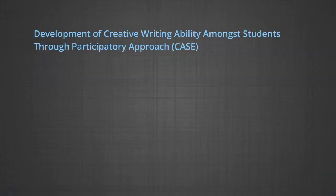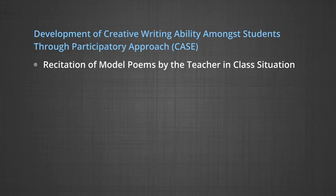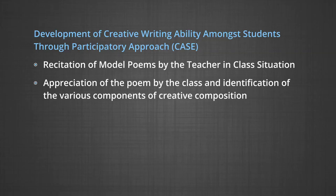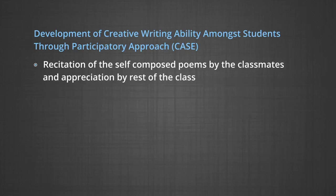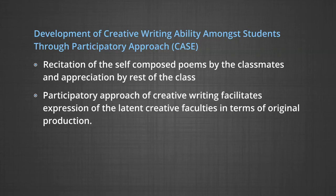Development of creative writing ability among students through participatory approach at CASE: recitation of model poems by the teacher in class, followed by appreciation of the poems by the class and identification of the various components of creative composition. After that, composition of a variety of poems by the students individually and in groups, then recitation of self-composed poems by classmates and appreciation by the rest of the class — participatory approach of creative expression of latent creative faculties in terms of original production.